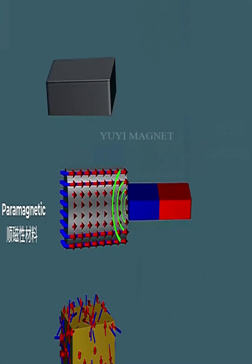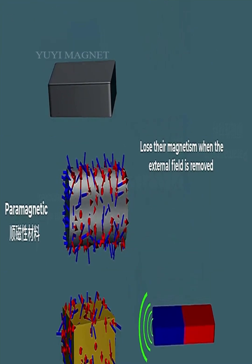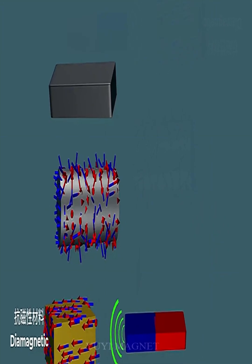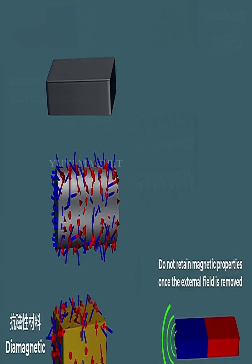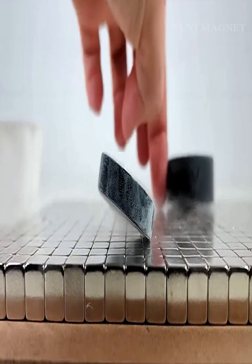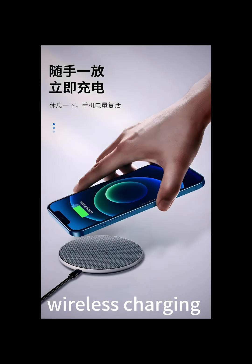To magnetize a material, we place it in a strong external magnetic field. The external field applies force to the atomic magnetic moments, guiding them to align with the field direction. This applies to motors, toys, magnetic suction, and wireless charging.